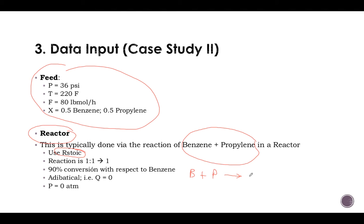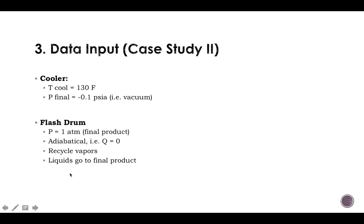The thing is that we only have 90% conversion with respect to benzene. So you need to add it, and it's adiabatical and vacuum. Now, the cooler is going to operate at these conditions. Flash drums, you know it's almost adiabatic. Since the final product must be at one atmosphere, then we need to operate at one atmosphere. And then recall that we need to recycle the vapors.